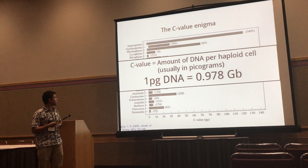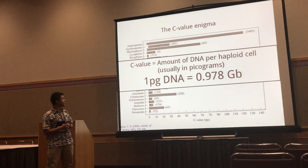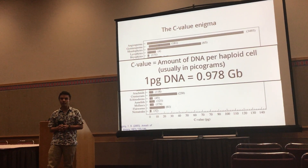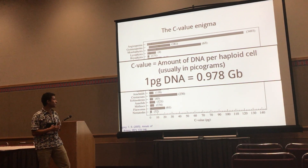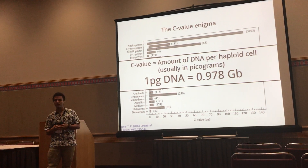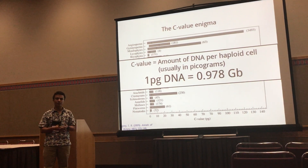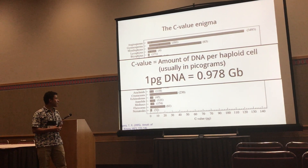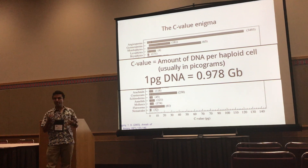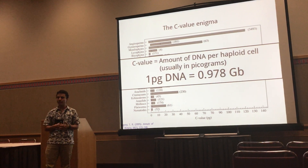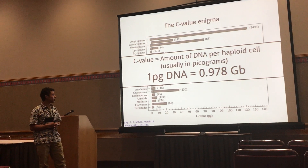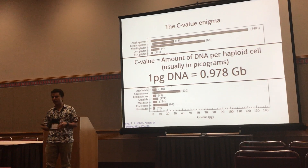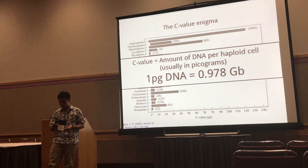The C-value is the amount of DNA for a haploid cell, and it's usually expressed in picograms. One picogram of DNA is roughly about a gigabase of DNA.